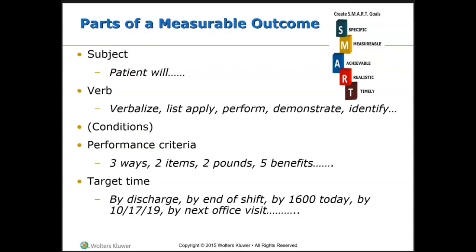Your outcome statement has to have certain parts to it. It usually starts with the patient or some part of the patient. Next it has a verb to indicate the action you want to see take place — your textbook lists about twelve different action verbs you can use, so please go there and take a moment to review them and write them down.